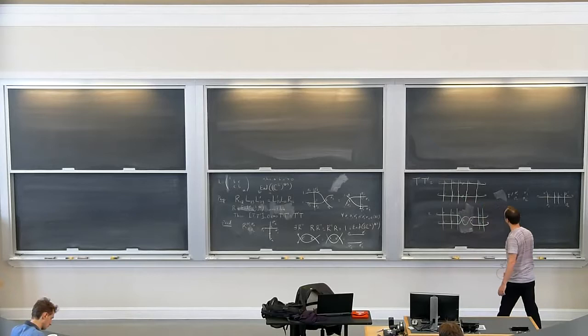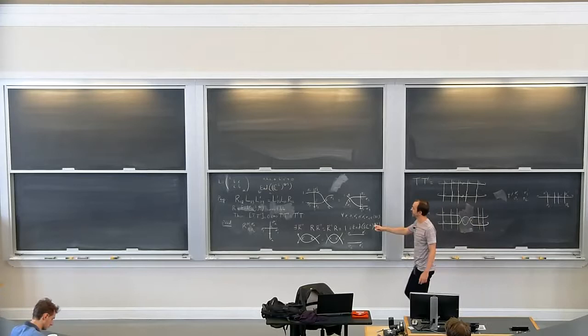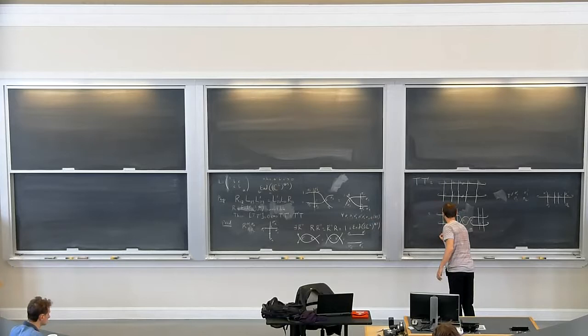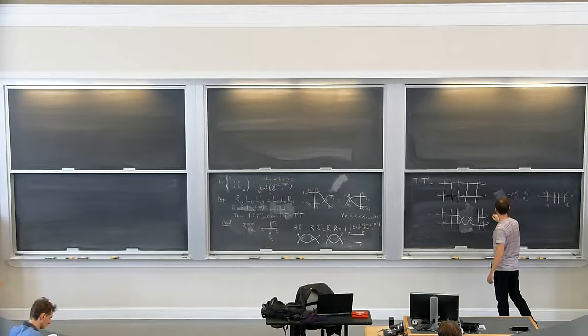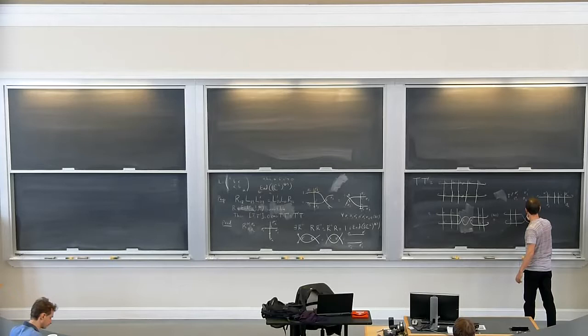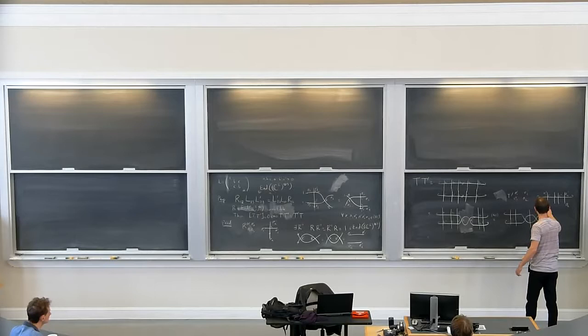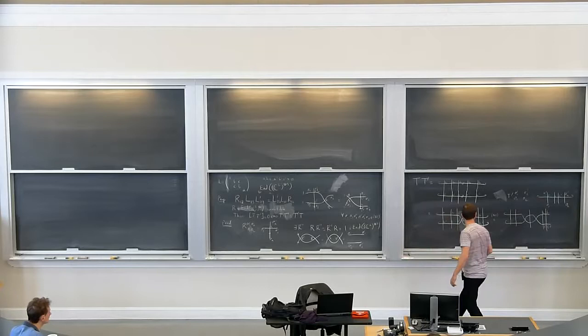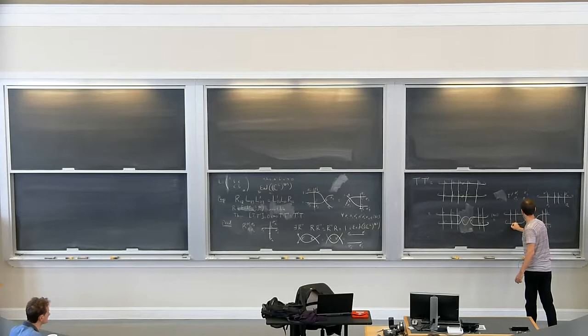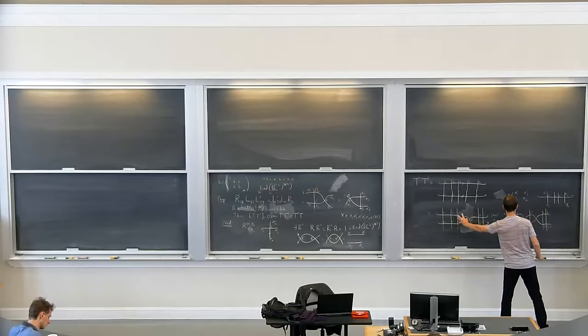Now we can apply the RLL relation on this side, which looks exactly the right form. So we replace the left-hand side with the right-hand side using the RLL relation. What happens is L and L prime have been switched at that crossing. Conveniently, L prime and L have been switched. And once you've done it once, you realize you can do it again — each time you apply the RLL relation, the crossing of the two lines moves one step to the left.